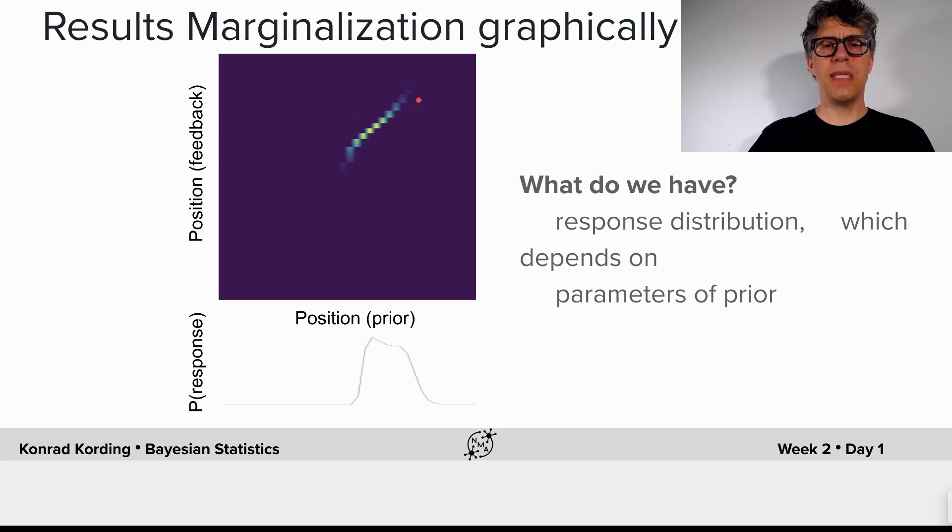So here we see what's happening here. This is the marginalization matrix that we have. Why is it only active in this area? Well, because we assume that the stimulus was something like this.